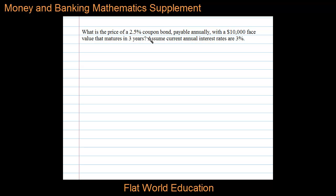What is the price of a 2.5% coupon bond payable annually with a $10,000 face value that matures in three years? Assume current annual interest rates are 3%.